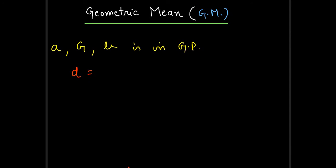Now, R equals G by a. We know that R, that is the common ratio, will be found by the second term divided by first term, or we can also find it by third term divided by the second term.